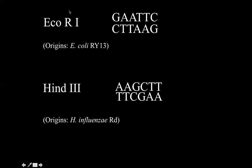There are hundreds of restriction enzymes that scientists can choose from these days, and they've all got these kind of funky names. ECO-R1, for example, has this name because of where it's originally from — E. coli strain RY13 — and the "1" at the end means it was the first from this particular strain of bacteria. HIN-D3 is normally found in H. influenzae RD — that's the HIN-D part — and it's the third from this particular type of bacterial strain.